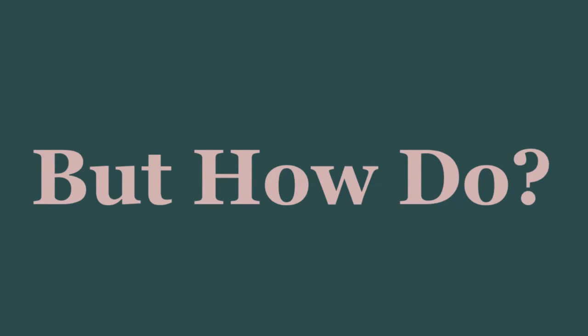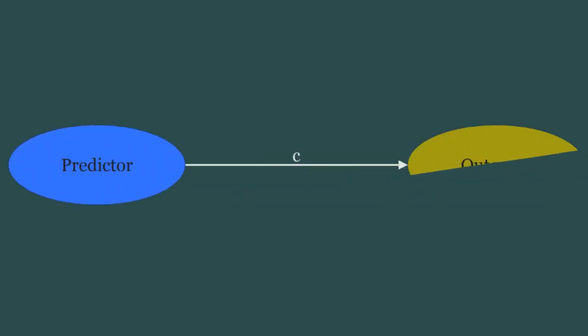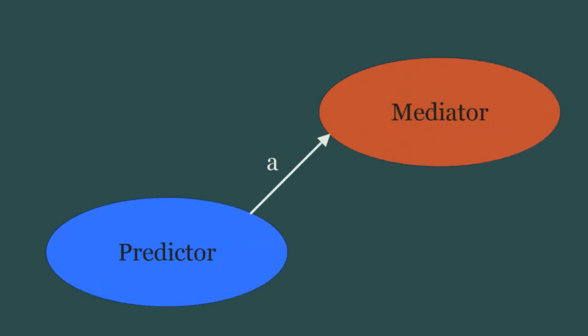So how do we conduct mediation analyses? Well, the old way of doing it is to conduct a series of regression analyses. The first one has just the predictor and the outcome. This is called the c-path. The second includes the predictor and the mediator. This is called the a-path.